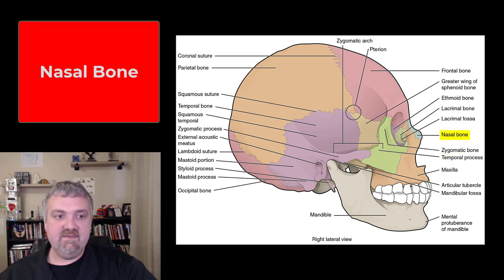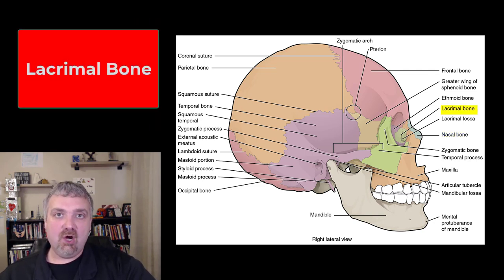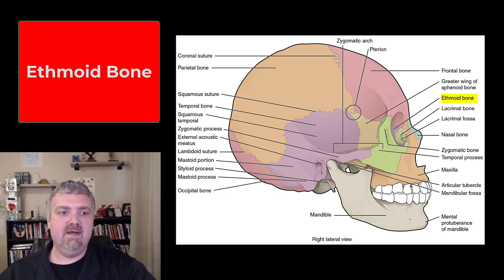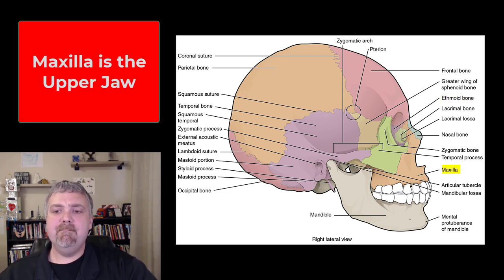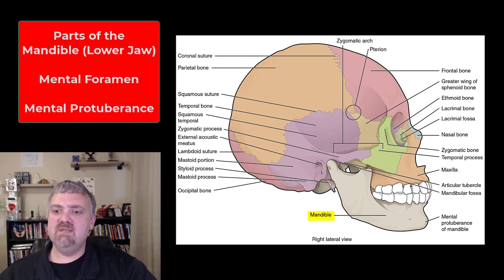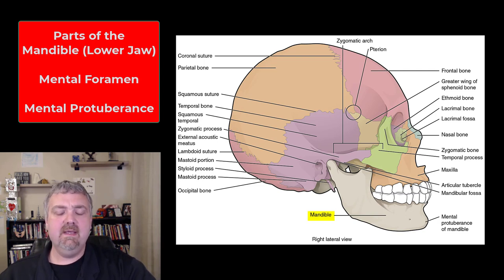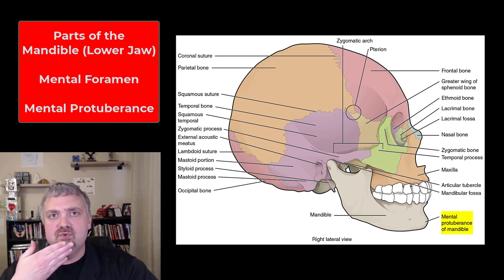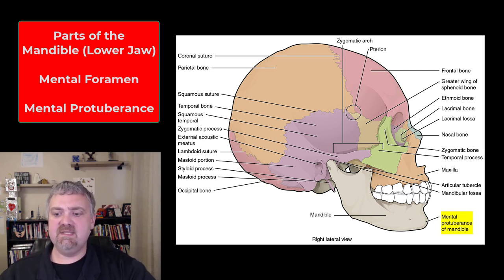The nasal bone is the bony portion of your nose — obviously you've got a lot of cartilage in front of it. Right behind that you see the lacrimal bone — think lacrimal for tears. Then the ethmoid bone; you can see a little bit inside the orbit of the eye. We also have the maxilla, which is just the upper jaw. The mandible has the mental foramen — that little hole right there on the chin — and the mental protuberance where the chin juts out at the front of the mandible.